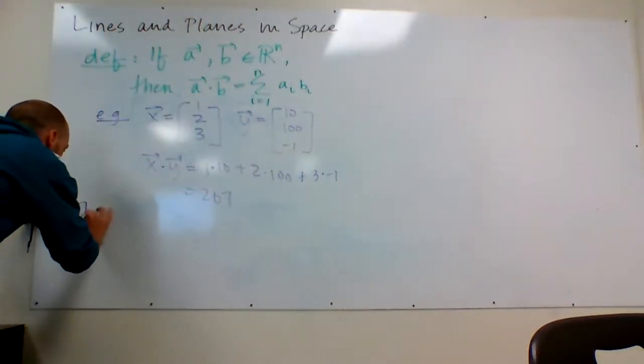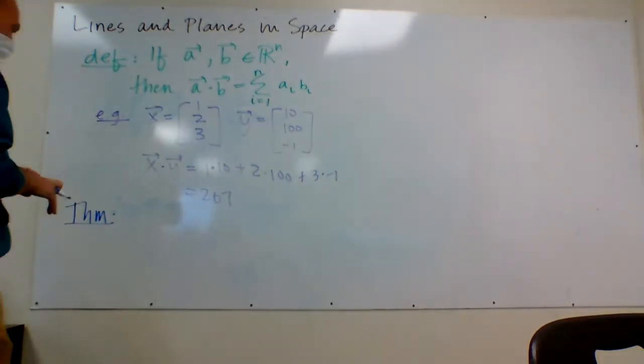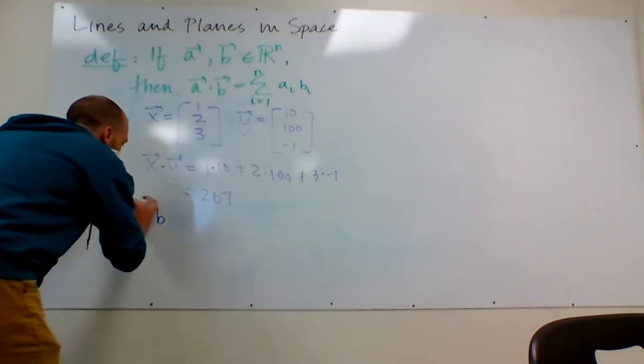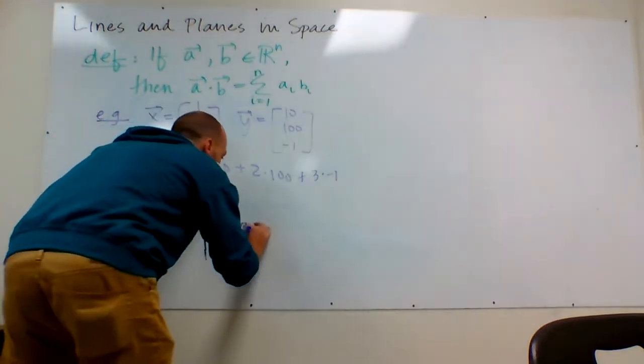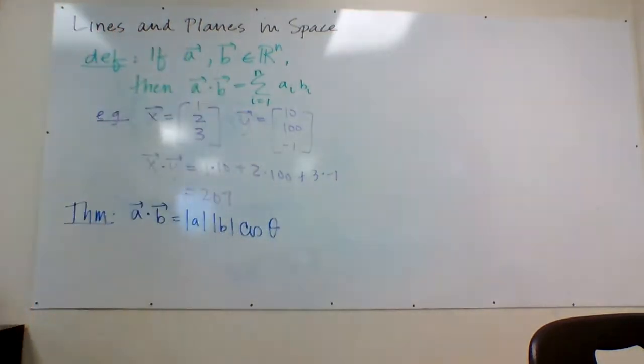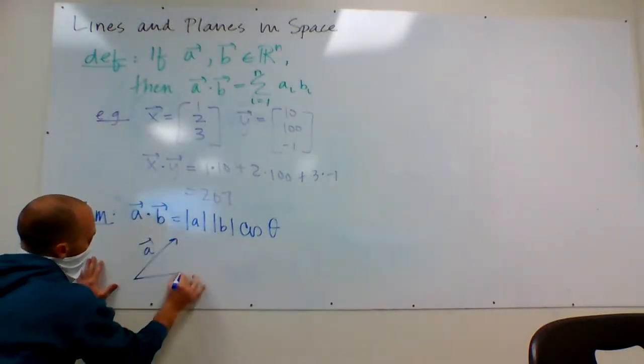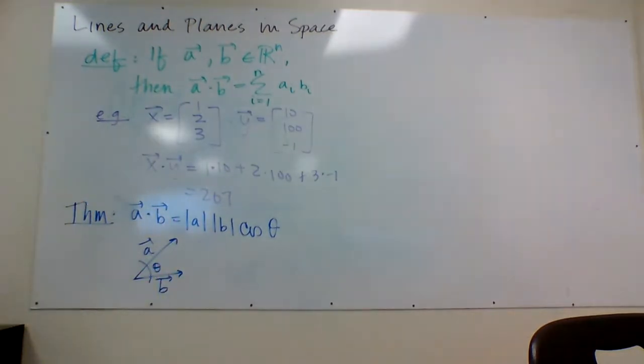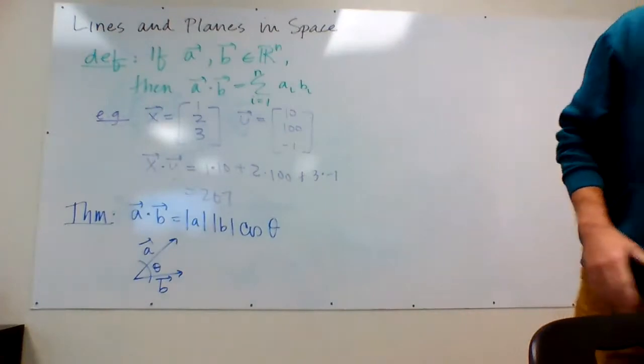And so the relevant theorem for the dot product, you might remember this from the first semester because I definitely used this in the linear algebra course, is that A dotted with B is equal to the length of A times the length of B times the cosine of the angle that sits in between them. So where I've got basically here's A, there's B, and this is the theta I'm talking about. That's going to be relevant to us. Don't really exactly remember how it's going to be relevant to us, but I know that we will need it.